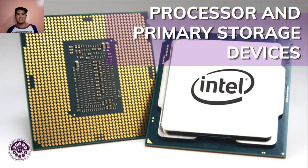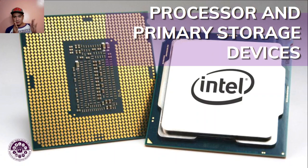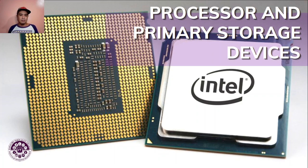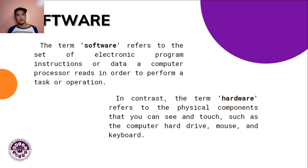The CPU or Central Processing Unit is what the processor actually looks like — it's that small chip inside the system unit. The typical tower case with the power button is the system unit, not the CPU itself. Intel and AMD are well-known processor brands, with AMD being popular for gaming.